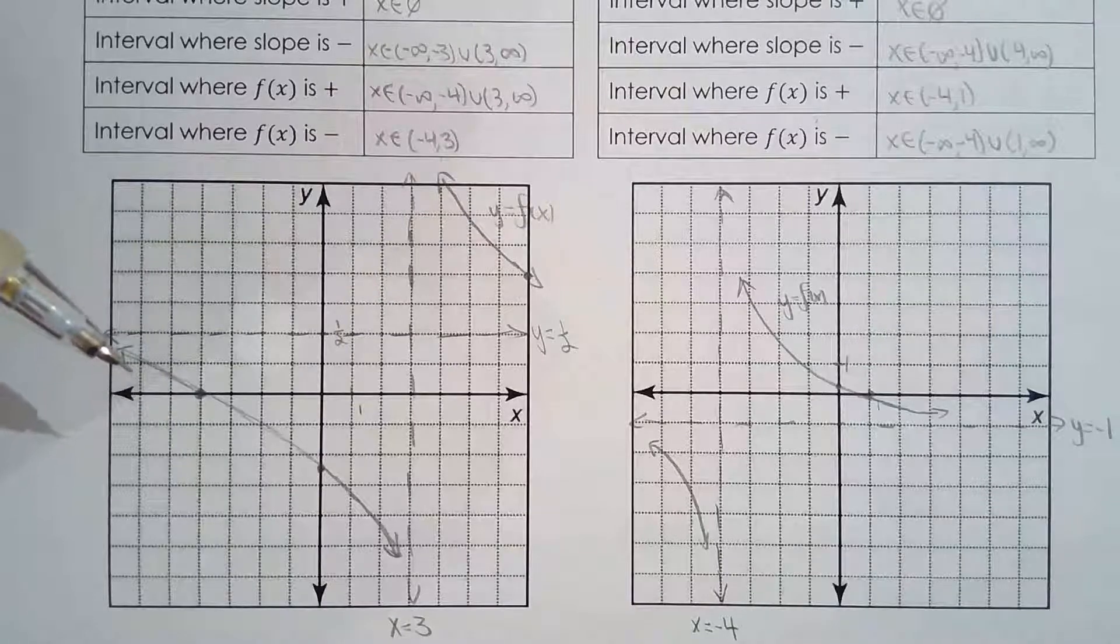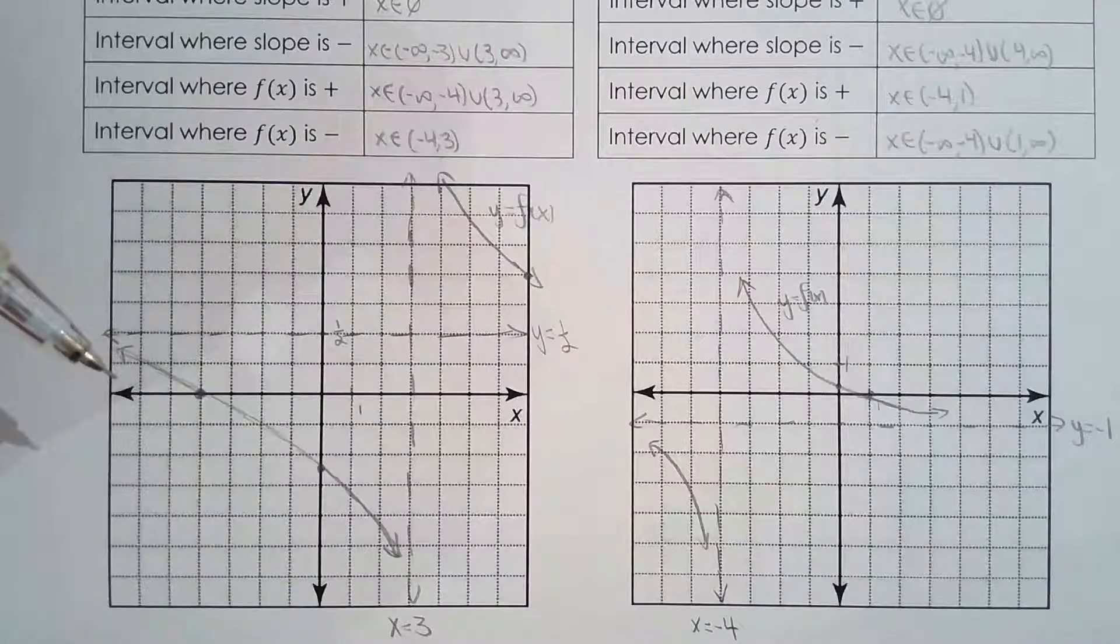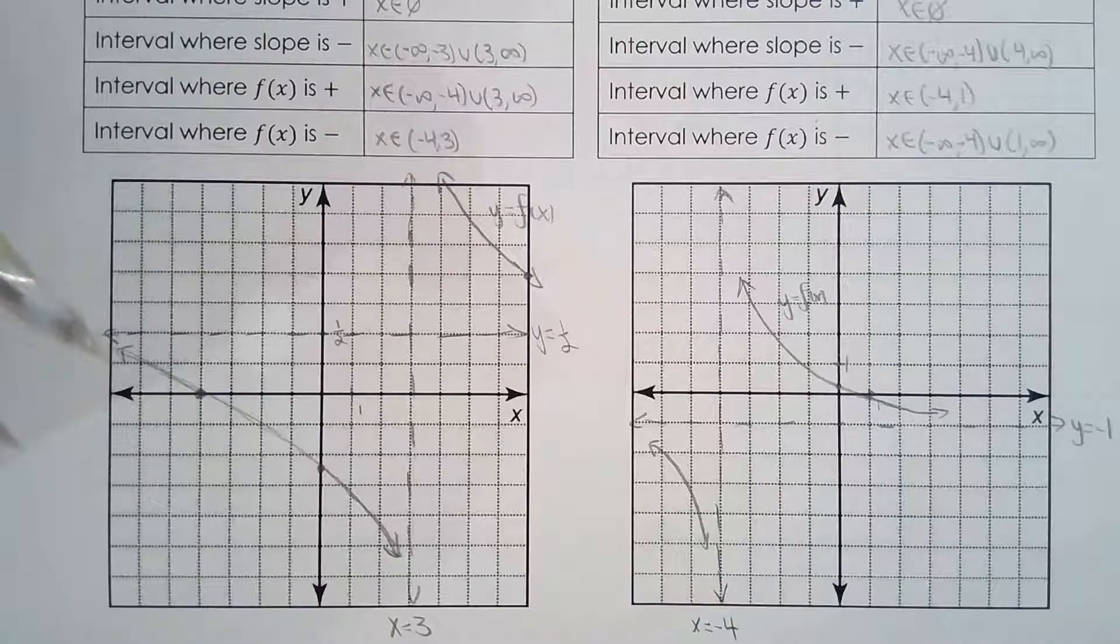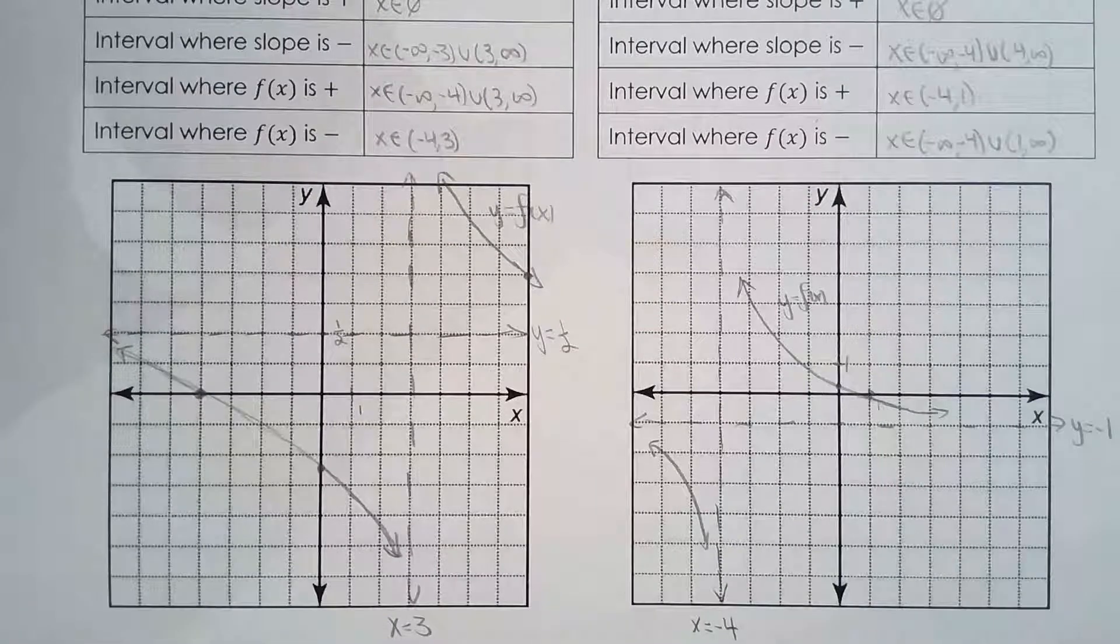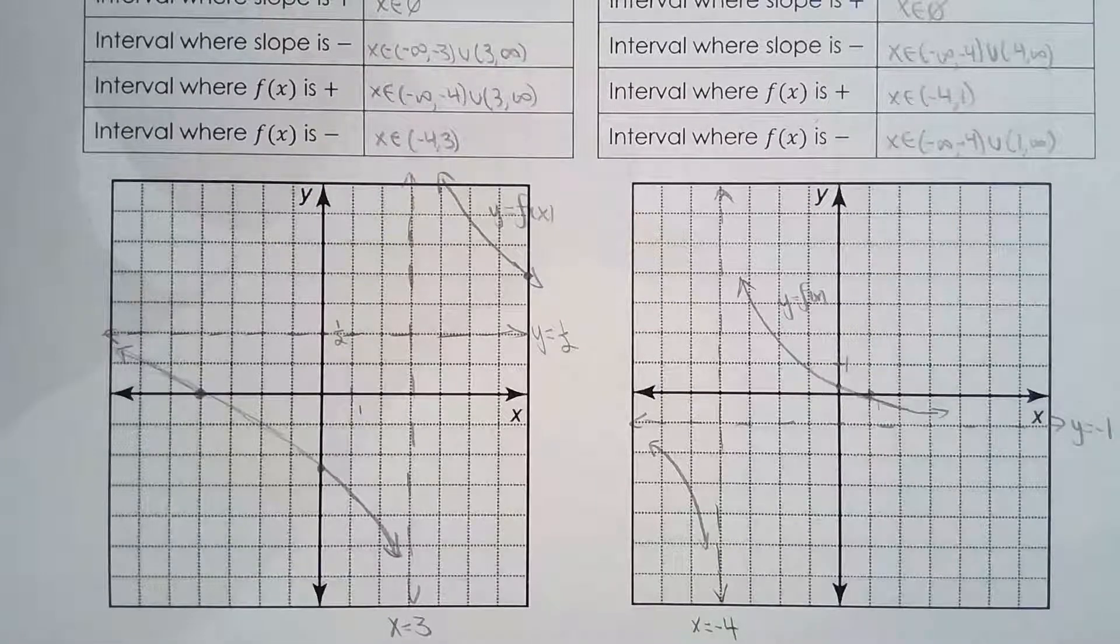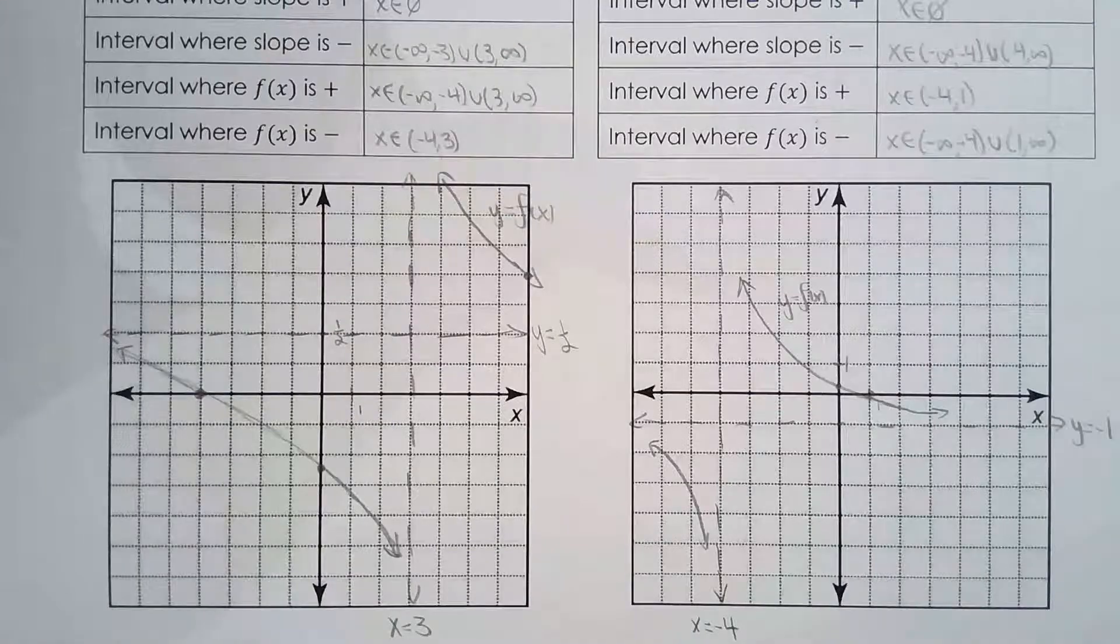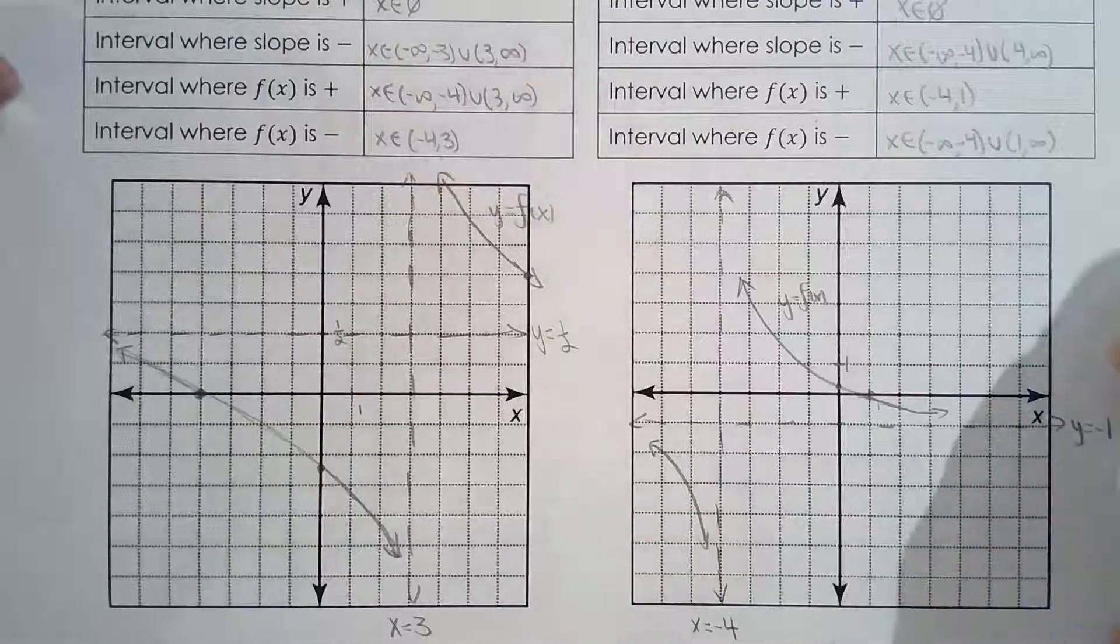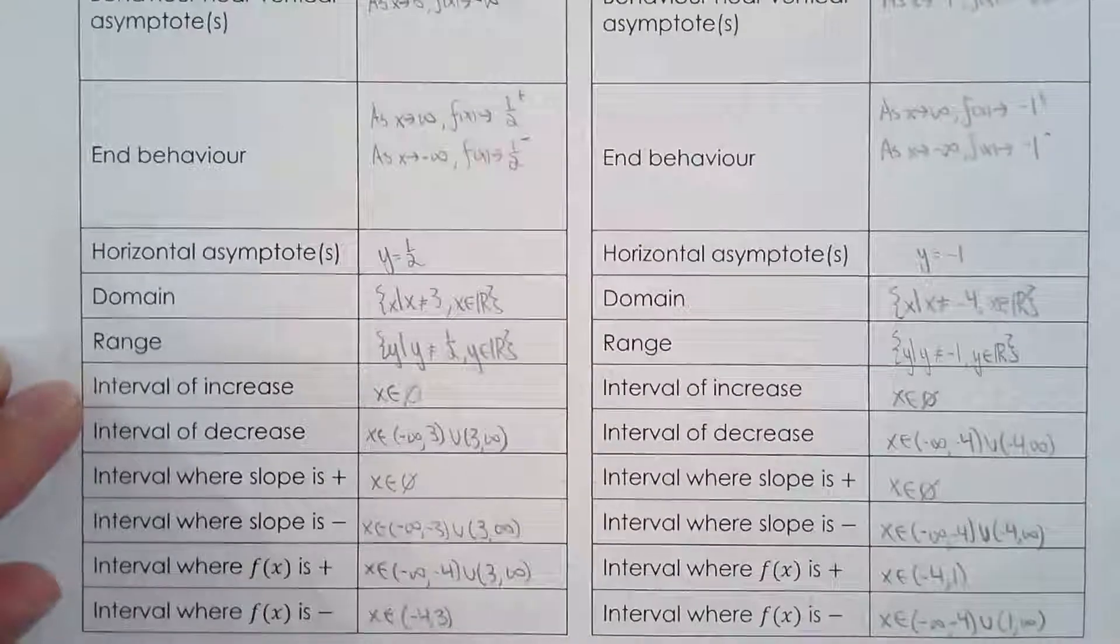There's information that's very readily extracted from the function. So it makes it very quick to graph any rational function that we work with so far. I'm going to slowly show you the table and then you can see if the answers are correct.